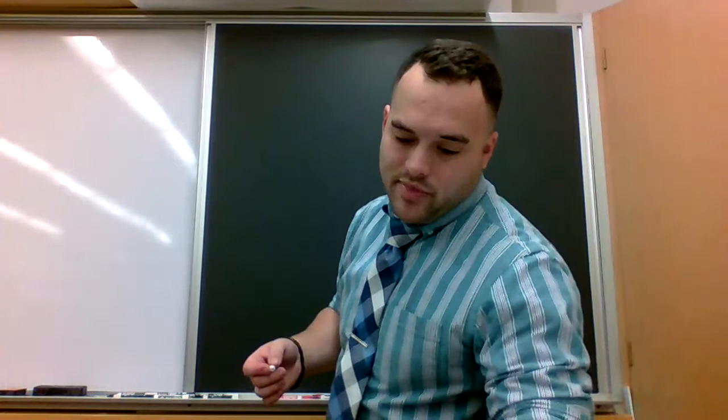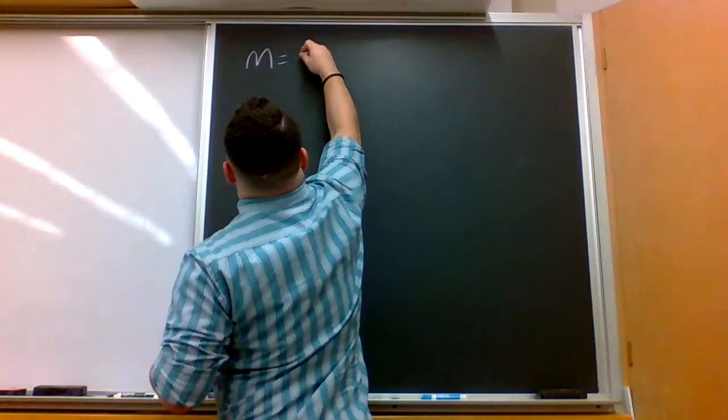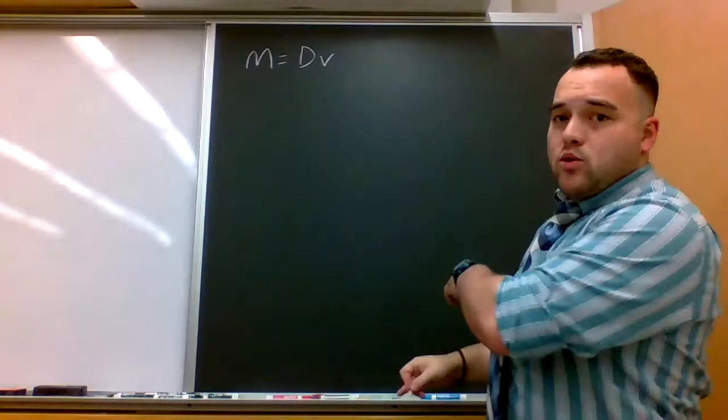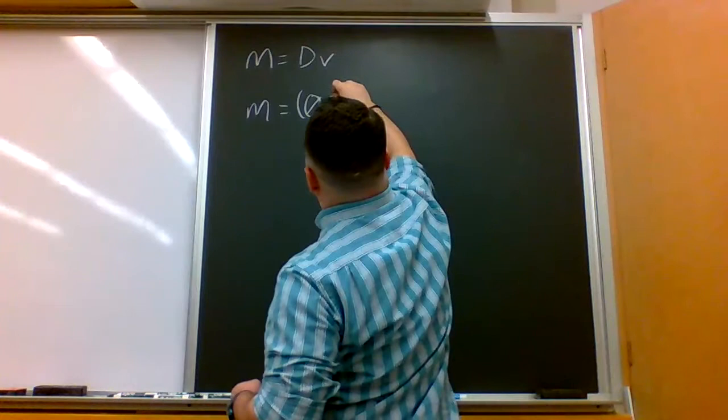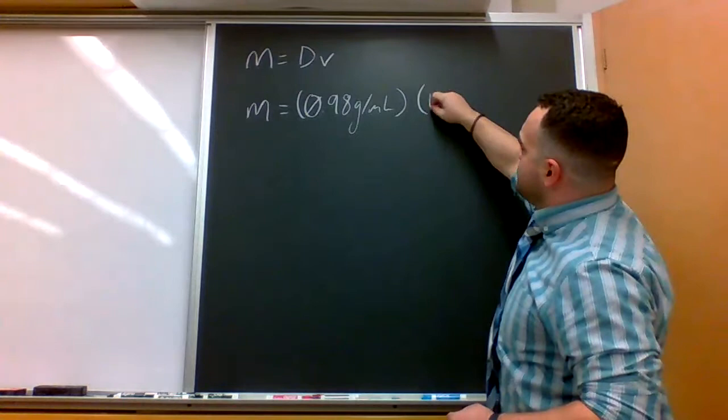If you are given density and volume, you can find the mass. So the mass will equal the density times the volume. So if we work backwards from that last problem, we'll see that the mass equals 0.98 grams per milliliter times...